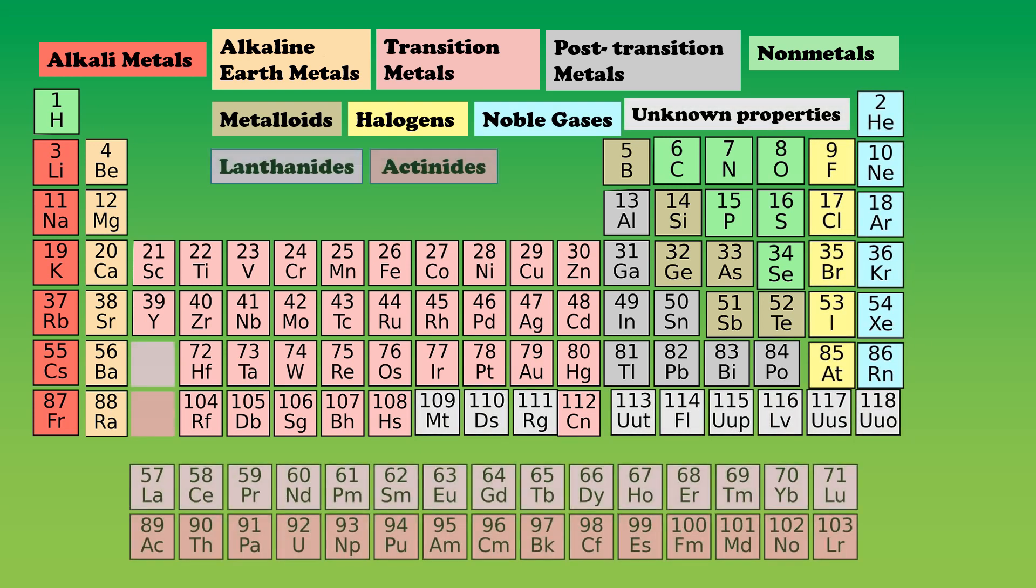In period 6 and 7, the elements with atomic numbers 57 to 71 and 89 to 103 are separately arranged below the periodic table to make it compact. Elements 57 to 71 are called lanthanides and 89 to 103 are called actinides. They are rare earth elements.